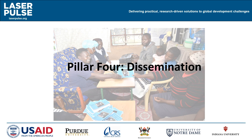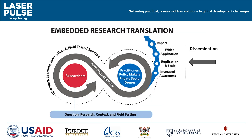Creating a policy brief alone does not complete research translation and does not create impact — audience matters. Determine what strategies are most effective for each audience to enable your project to effectively deliver solutions to the right actors toward eventual scale and wider application. In the embedded research translation process, dissemination occurs along the pathway from networks, policy makers, private sector partners, and donors through increased awareness, replication, and wider application, usually leading to greater impact and better informed decision making.